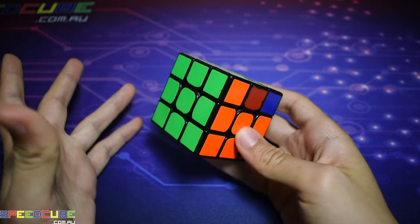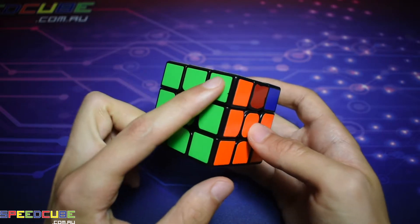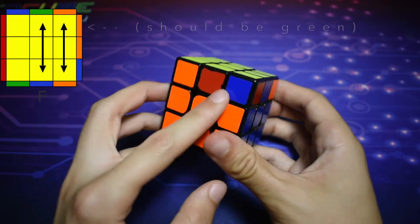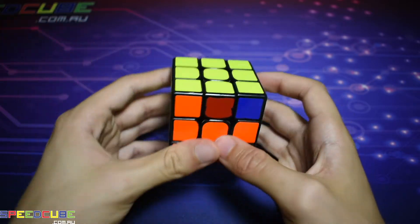The F perm is an adjacent corner swap PLL and is easily recognizable because you've just got a solid 3x1 block over here and no other bars on the rest of the cube.